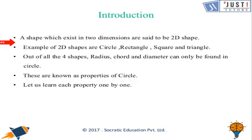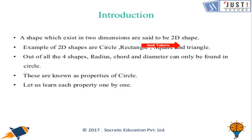Introduction: a shape which exists in two dimensions is said to be a 2D shape. Examples include circle, rectangle, and square. Out of all these shapes, radius, diameter, and chord can only exist in a circle. So these are basically the properties of a circle.